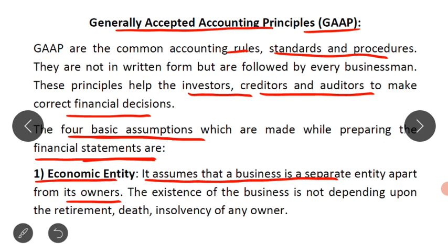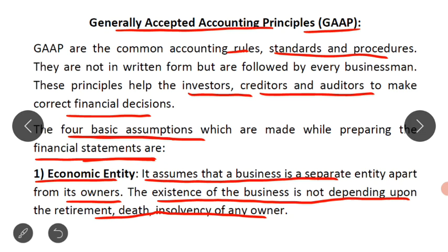We assume that the existence of the business is not dependent upon the retirement, death, or insolvency of any owner. The business existence is not affected because the owner retires, passes away, or becomes insolvent. This is the first assumption.